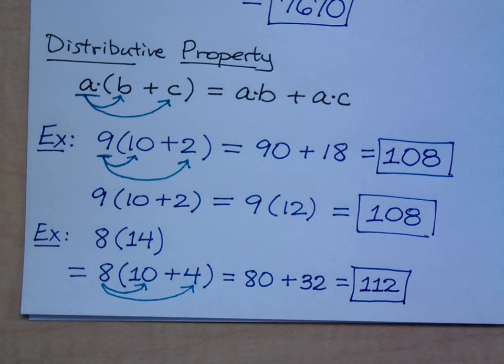Could you have done 8 times 14 the normal way, and still got 112? Yes. But if we can open up our minds to see numbers in a different way, then we might be able to do some funner stuff.